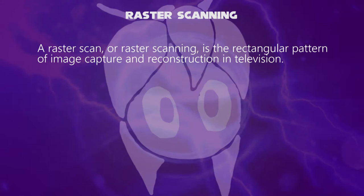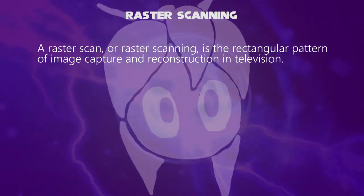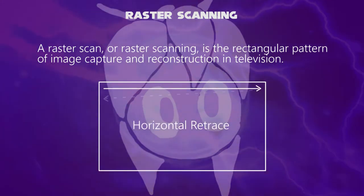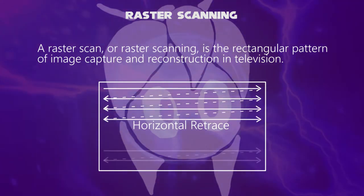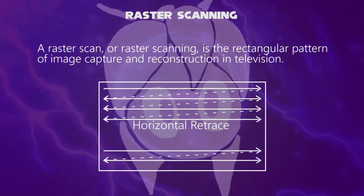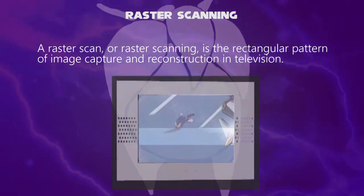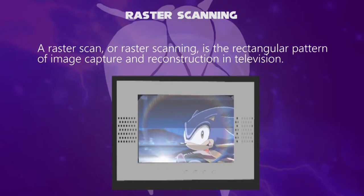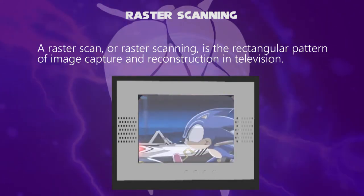A raster scan is the rectangular pattern of image capture and reconstruction in television. In cathode ray tubes, the electron beam sweeps one line at a time, then the next line and so on. But the actual speed is much more rapid, according to the electrical frequency of 50 to 60 hertz.